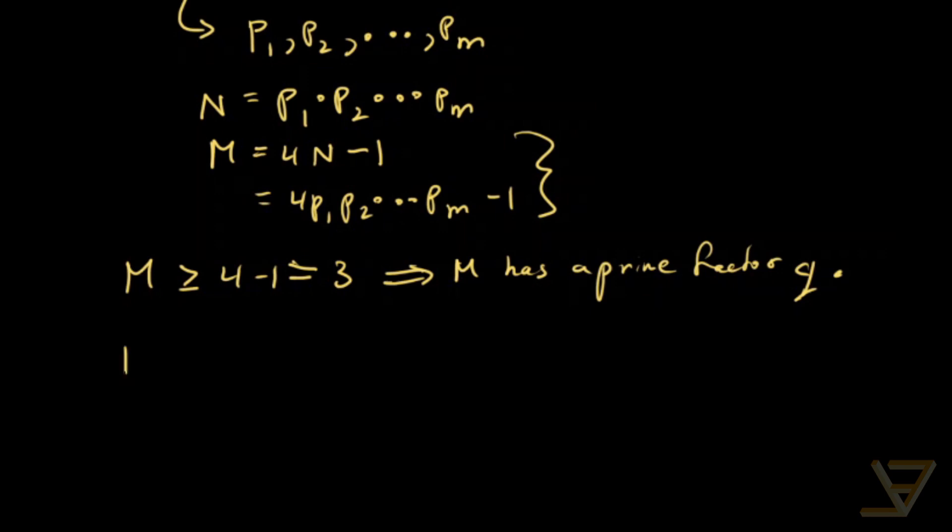So q divides M, which equals 4p1p2...pm minus 1, and this is odd. So q can't be 2, and q is also odd.